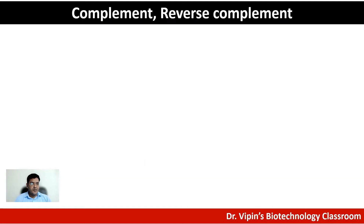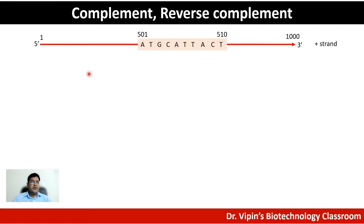Today we discuss a very basic and fundamental concept in biotechnology: the concept of complement and reverse complement. First, let us have a look at the basic ideas, and then we move on to the practical demonstration. Here I represent one strand of DNA. DNA has an orientation — it has a five prime end marked by the phosphate group and a three prime end marked by an OH group.